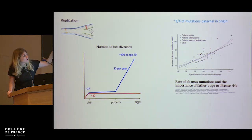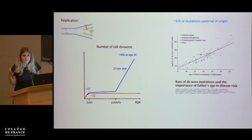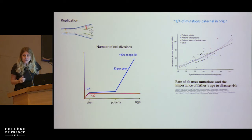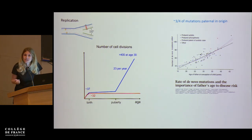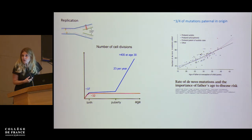On this plot the y-axis shows the number of mutations inherited by a child from both mother and father, and the x-axis shows the age of the father at conception. You can see a good fit of just a line through these data.